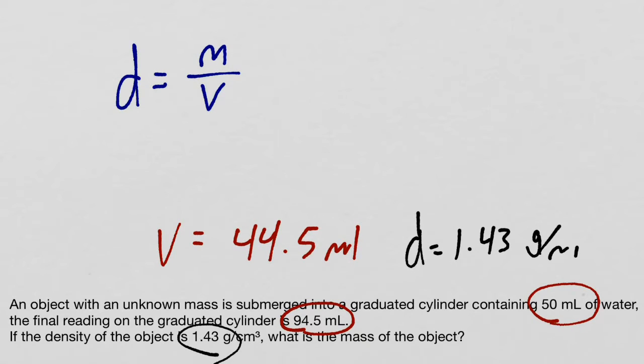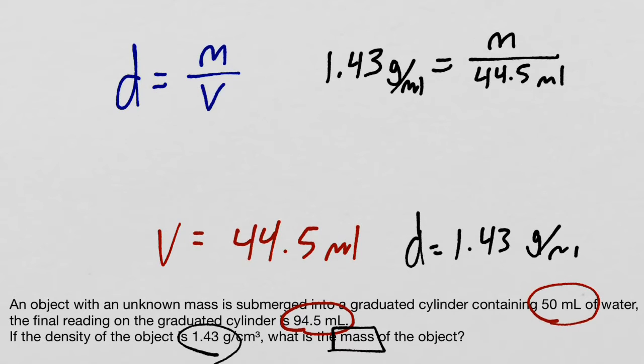The problem is asking for the mass of the object, so if we plug our two knowns into this equation it would look something like this: 1.43 grams per mil is equal to our mass, which is what we don't know, over the volume which would be 44.5 mils. We would want to rearrange this equation, and if we did that we would want to multiply both sides by V, and we would get that dV equals m.